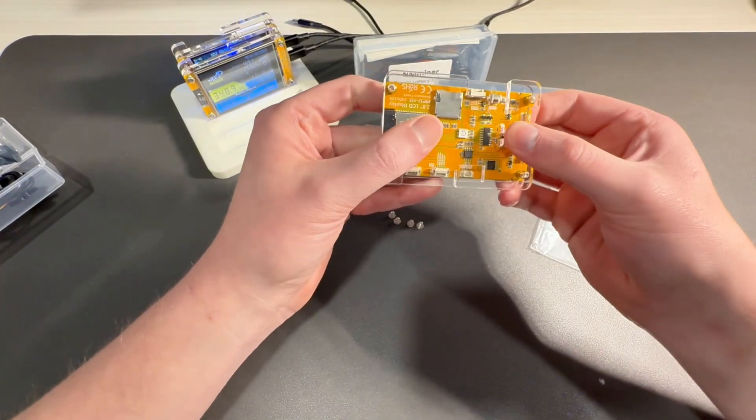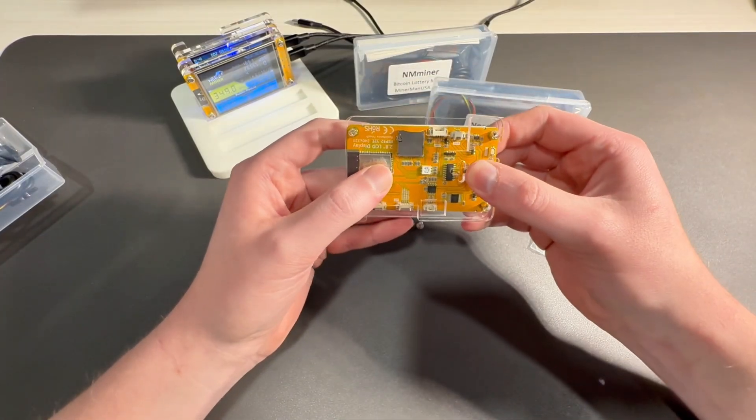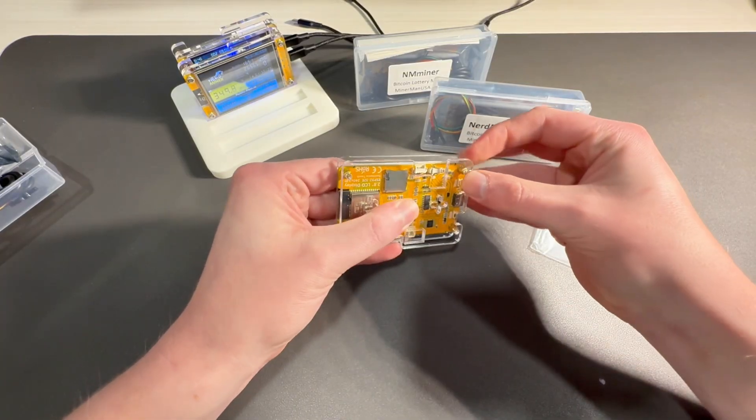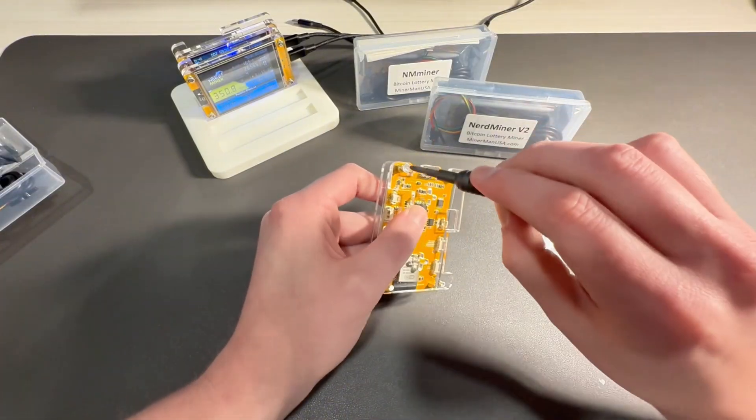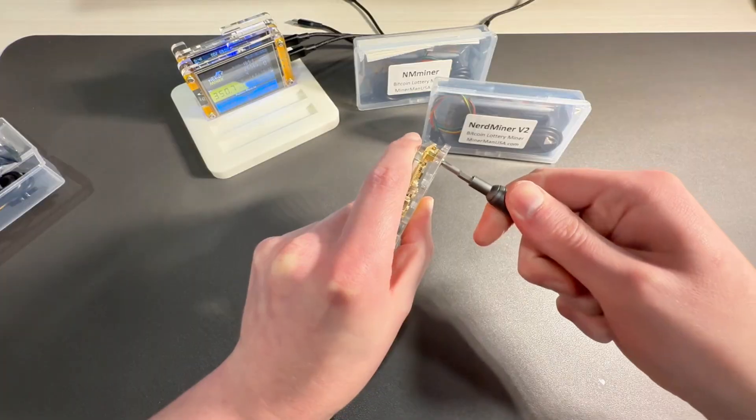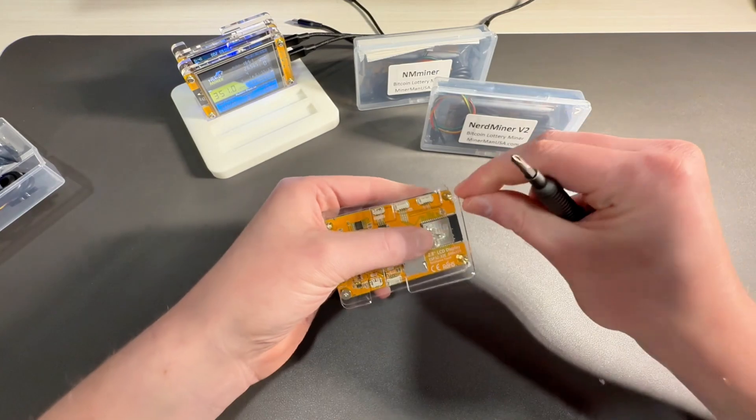You align that, take one of your short screws and put it through the back. Once it's aligned, you do need a phillips head screwdriver for this side. Just tighten it down, and like I said, lightly, you don't need a lot of tension.